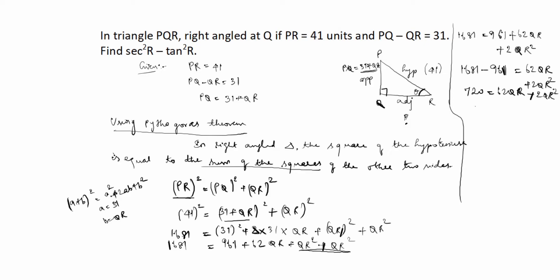We can write this as 2 QR square plus 62 QR minus 720 equals 0. Since 2 is divisible into all terms, dividing through by 2 gives: QR square plus 31 QR minus 360 equals 0.